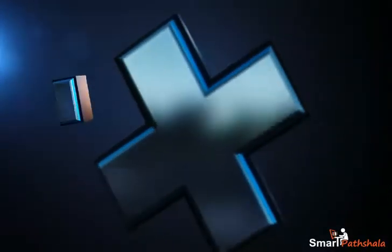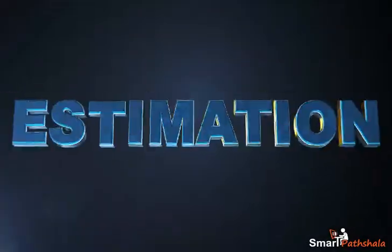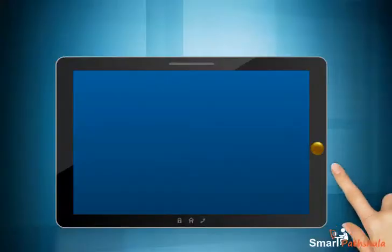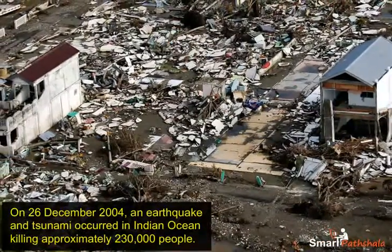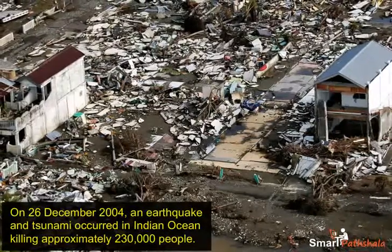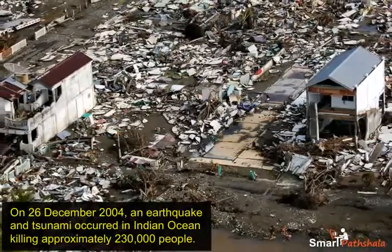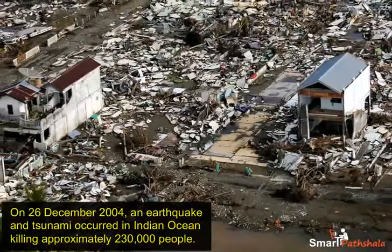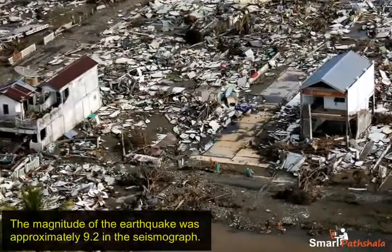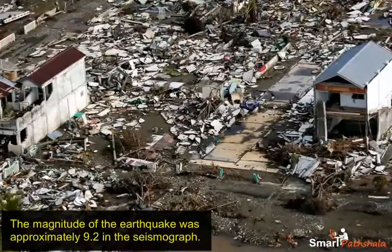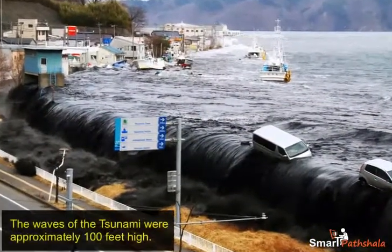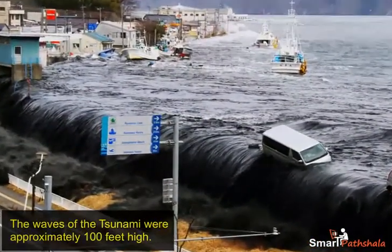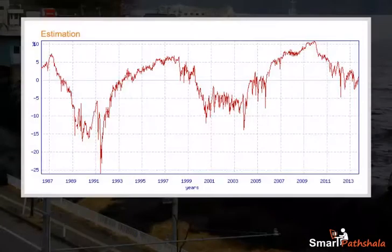This model will explain the basics of estimation. On 26th December 2004, an earthquake and tsunami occurred in the Indian Ocean, killing approximately 230,000 people. The magnitude of the earthquake was approximately 9.2 on the seismograph. The waves of the tsunami were approximately 100 feet high. Here we see that all the data has been estimated, and there can be slight changes in the actual values.